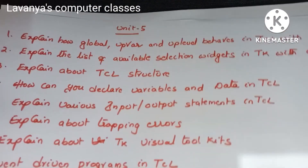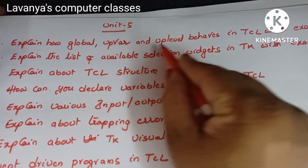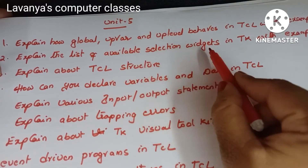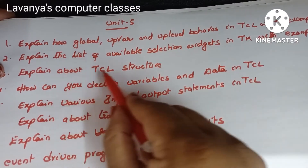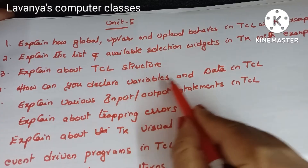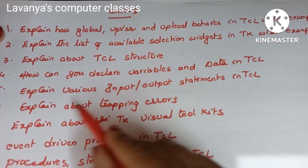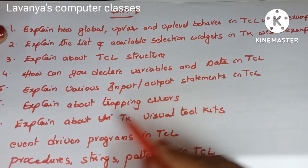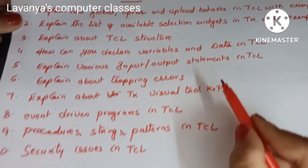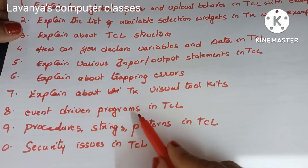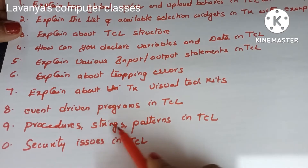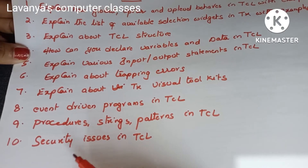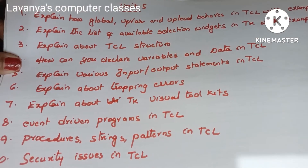Unit 5 important questions: explain how global, upvar, and uplevel behave in TCL with examples. Explain the list of available selection widgets in TK with examples. Explain TCL structure — how to declare variables and data in TCL, and what are the different types of data. Explain various input/output statements in TCL. Explain about trapping errors. Explain TK visual toolkits. Explain event-driven programs in TCL. Explain procedures, strings with examples, and patterns in TCL. What are the security issues in TCL? These are the important questions in scripting languages.